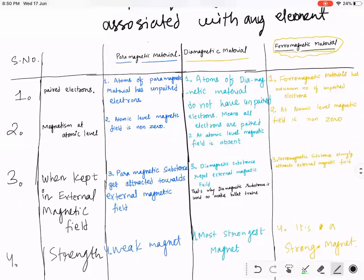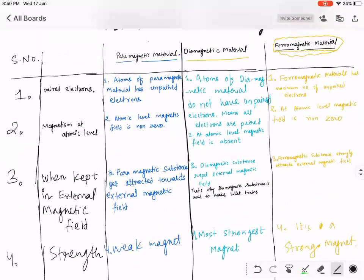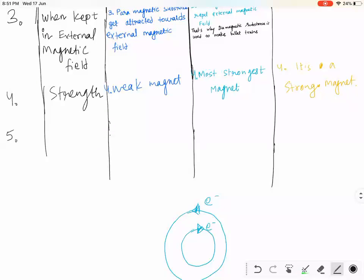Diamagnetic, paramagnetic, or ferromagnetic? It is a ferromagnetic material. So when you rub a ferromagnetic material with a magnet, the ferromagnetic material itself becomes a magnet.